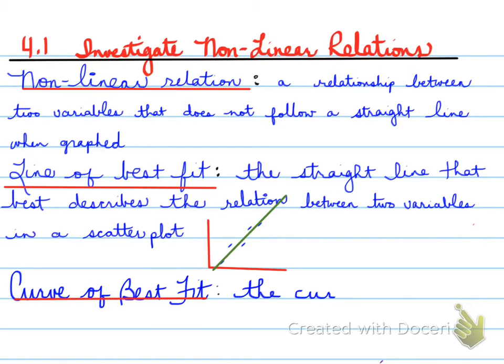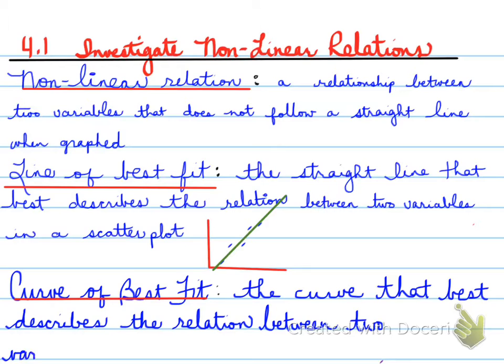A curve of best fit is the curve that best describes the relation between two variables in a scatter plot. Now, this particular example here, we're going to look at an example on the next line that involves a curve of best fit.